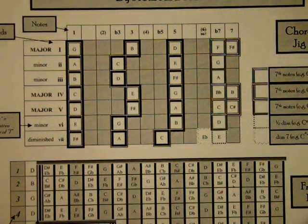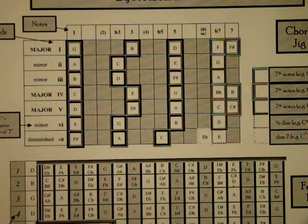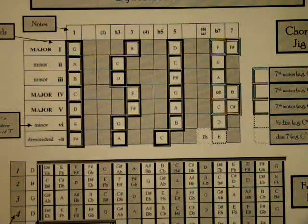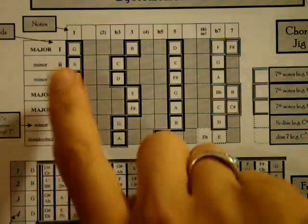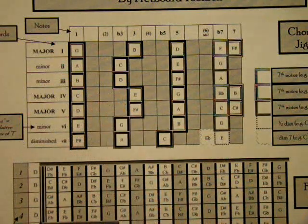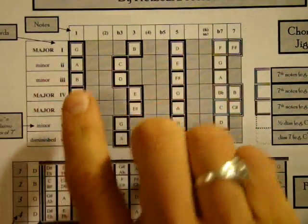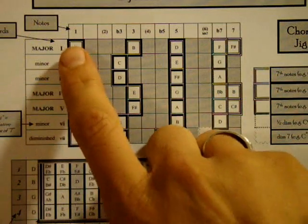On a banjo that would sound like this: G, A, B, C, D, E, F sharp, G. Now those notes are so important because all of the chords that are in the key of G major — all the basic triads, these three-note chords — are all built off of those seven notes.